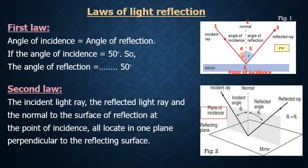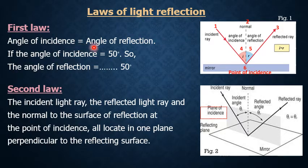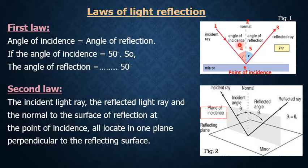When light reflects on a surface, its reflection is ruled by two important laws: the first law and the second law. The first law tells us that the angle of incidence equals the angle of reflection, as we see in figure 1. So if we know that the angle of incidence equals 50 degrees, the angle of reflection also equals 50 degrees, because according to the first law, the two angles are equal.